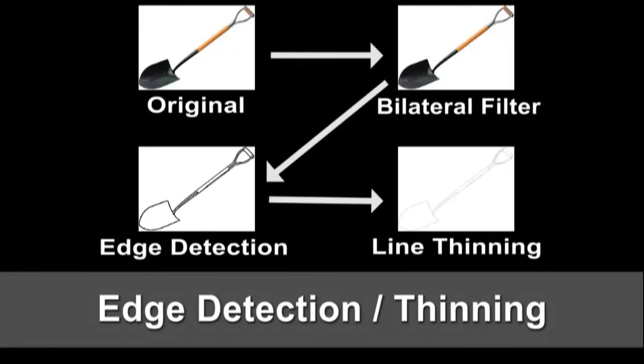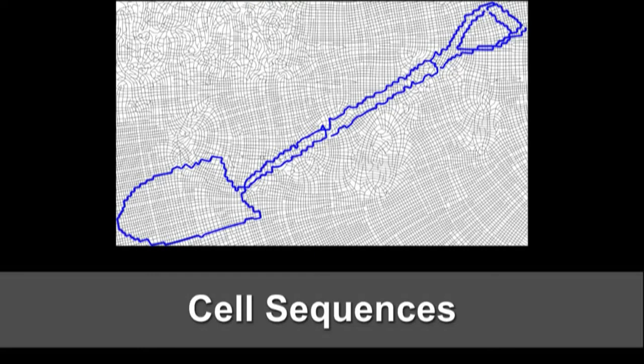Given a previously generated grid and a secondary input image, we start by smoothing the image through flow-based bilateral filtering prior to extracting its edges. Again, we apply thinning to obtain a collection of one-pixel-wide line segments. We then proceed to identify the set of grid cells which are intersected by these lines. Each set of grid cells forms what we call a cell sequence.